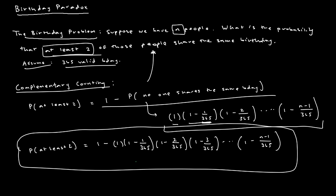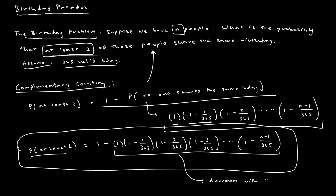One thing we notice immediately is that as n increases, the probability of two people sharing the same birthday also increases. Since n is getting larger, we're multiplying more terms, and all of these terms — except the first — are less than one. So our product, which represents the probability that no one shares the same birthday, decreases with increasing n. When we subtract that decreasing number from one, this probability continues to increase.